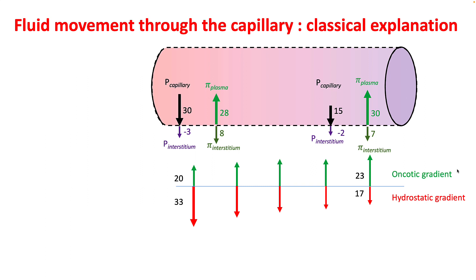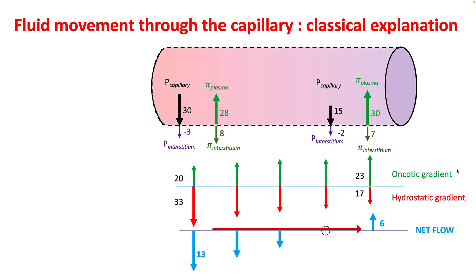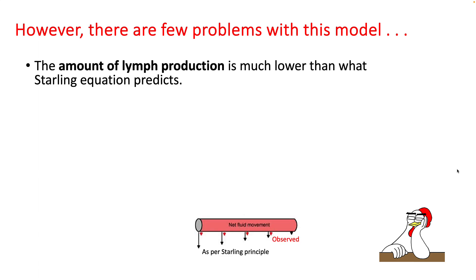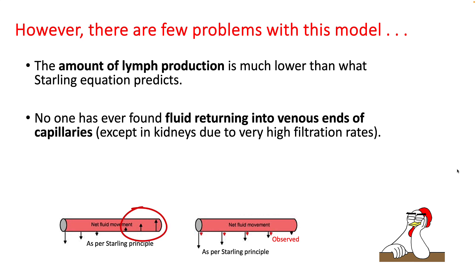Overall fluid movement through the capillaries depends upon the difference in hydrostatic and oncotic pressure at every point on the capillary bed. As you move from arterial to venous side, your oncotic pressure gradient increases while your hydrostatic pressure decreases. So your net flow is highest on the arterial side and least on the venous side, and by the end of the capillaries there might be some net inward movement. However, there are a few problems with this model. The amount of lymph produced is much lower than what the Starling equation predicts, and nobody has ever found fluid returning into the venous side of the capillaries, except in kidneys where the filtration rate is very high.